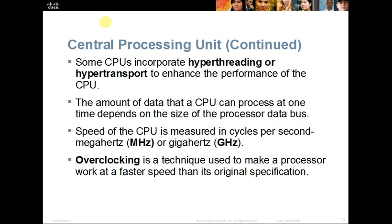Our CPUs are measured in megahertz or gigahertz — the speed, or cycles per second, that our CPU works at. A couple of terms to be familiar with are hyperthreading and hypertransport, which are incorporated into our CPU and can enhance its performance. Some manufacturers get around processor limitations by using a technique called overclocking, which allows the processor to work faster than originally specified.